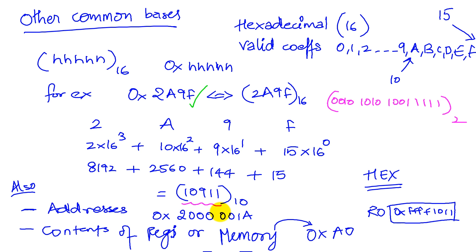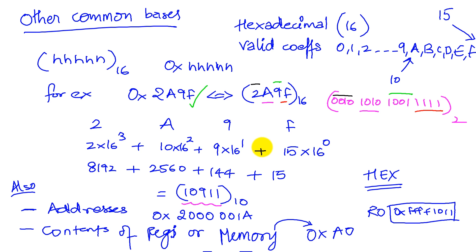There's a convenient way of figuring this out. Because hexadecimal and binary share a base-power relationship, F is 15, which in binary is 1111; 9 is 1001; A is 1010; and 2 is 0010. So this is a simple way of converting between forms. Notice that it's much simpler to write 2A9F than to write the entire binary representation. Hex is a very convenient notation that will be used throughout this course.